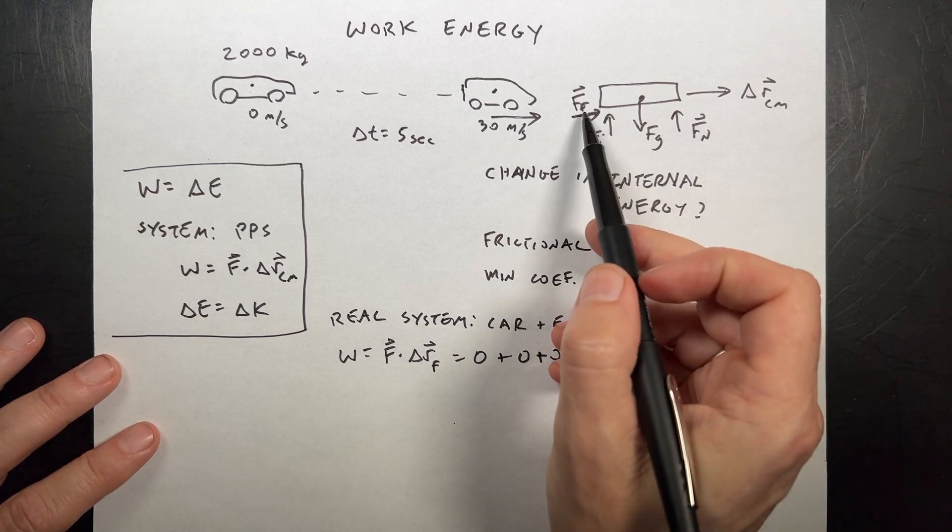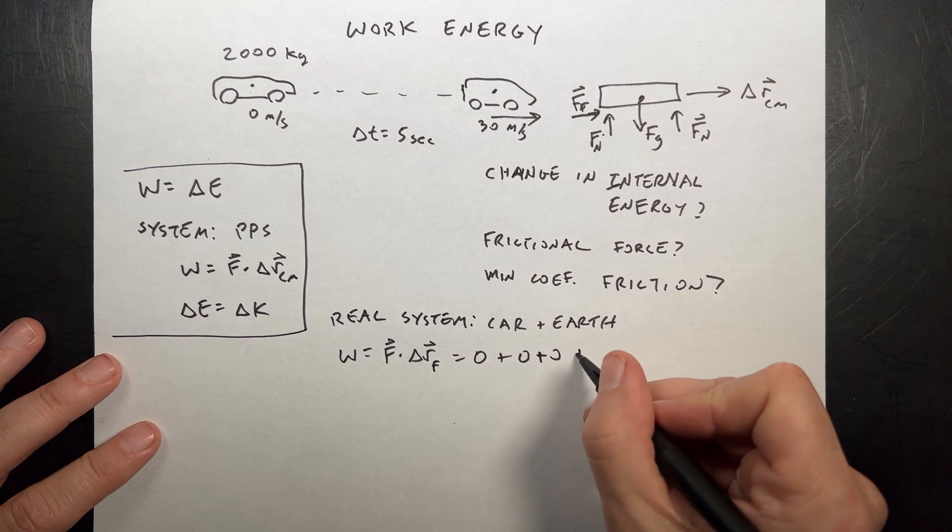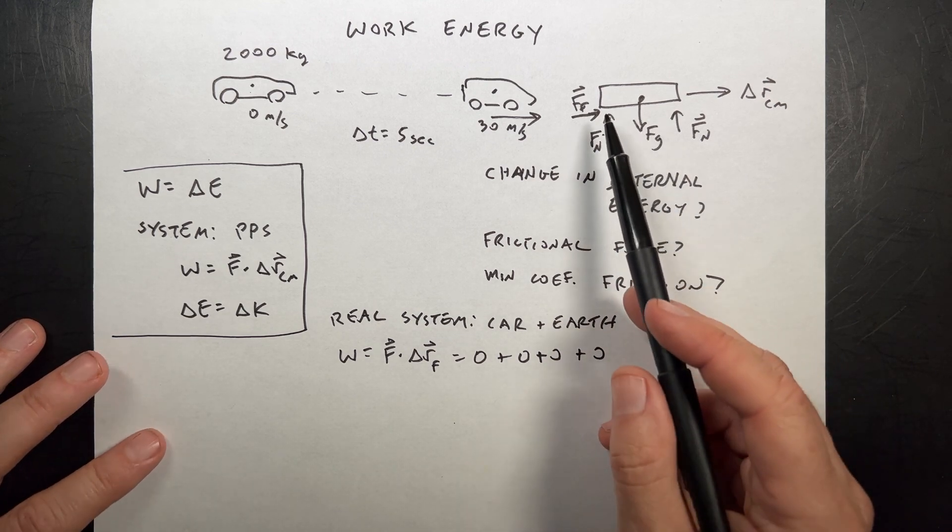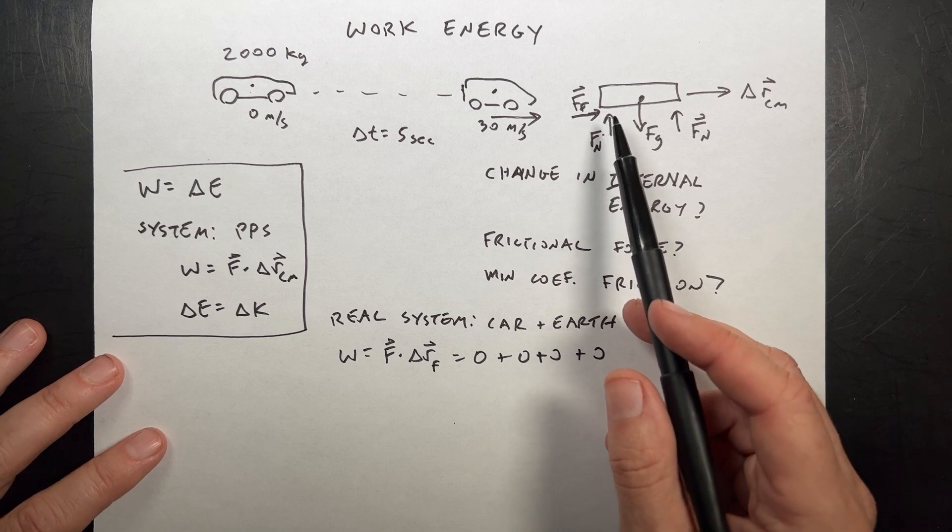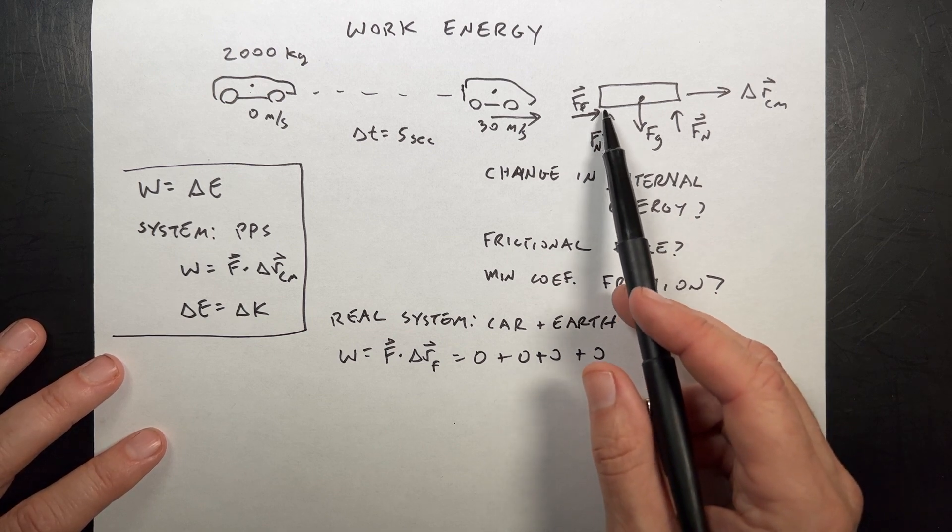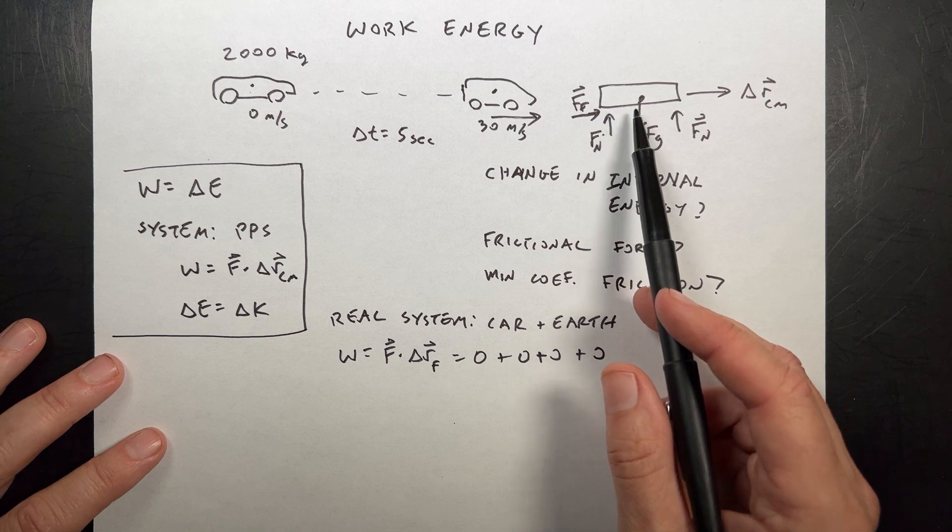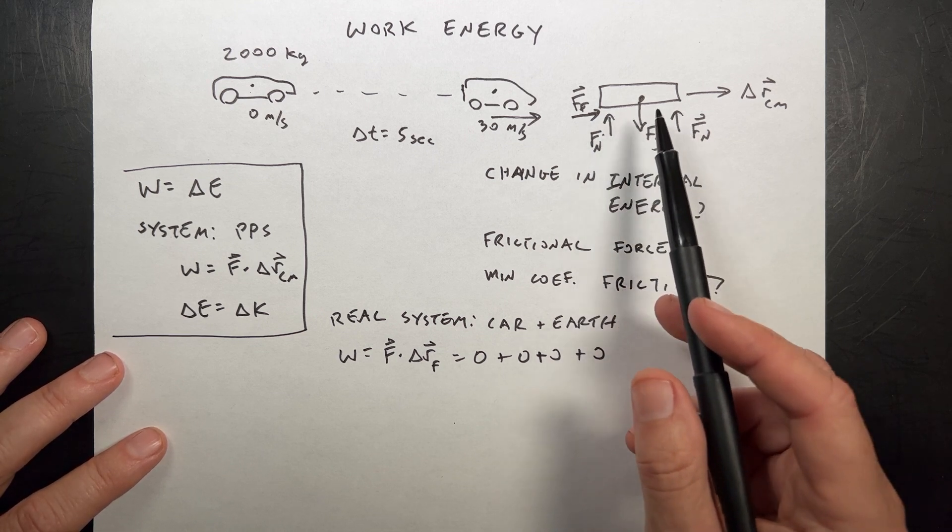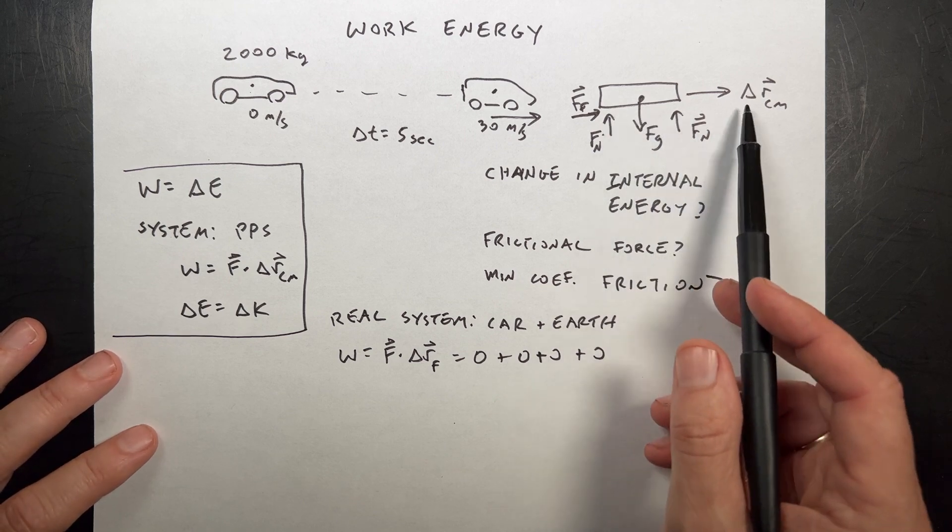And then what about the frictional force? Zero. Why does the frictional force do zero work? The answer is because the frictional force doesn't move. The point of contact between the road and the tires moves, but it's a new point. The force doesn't move.